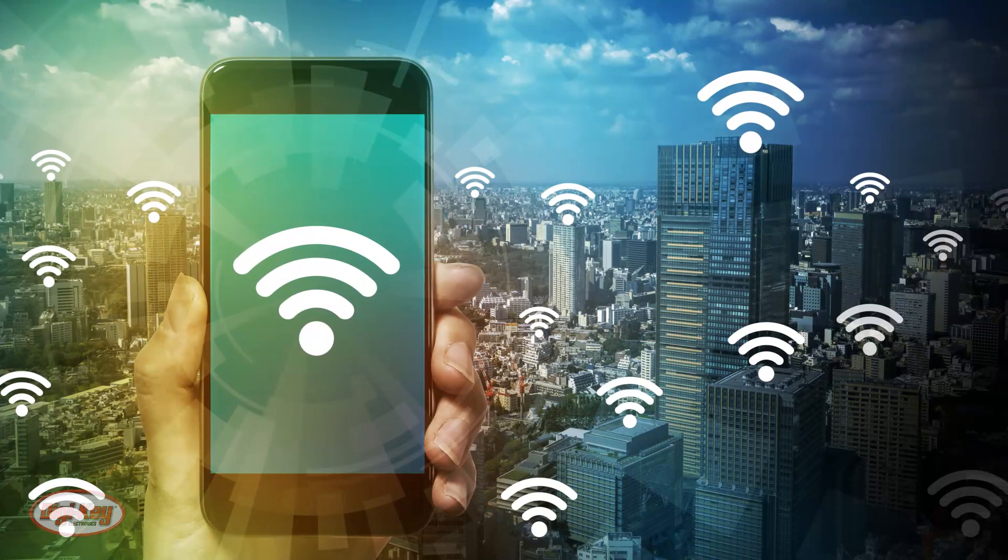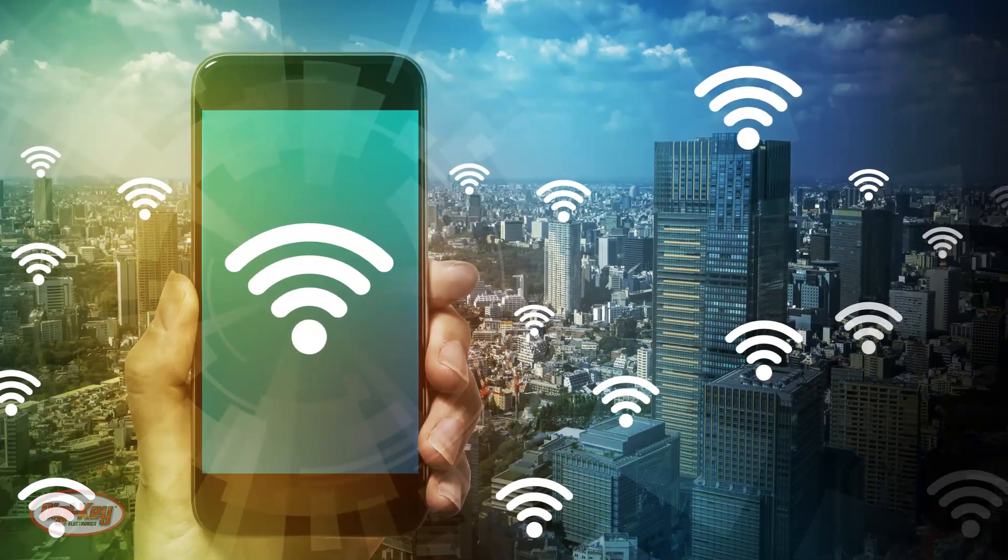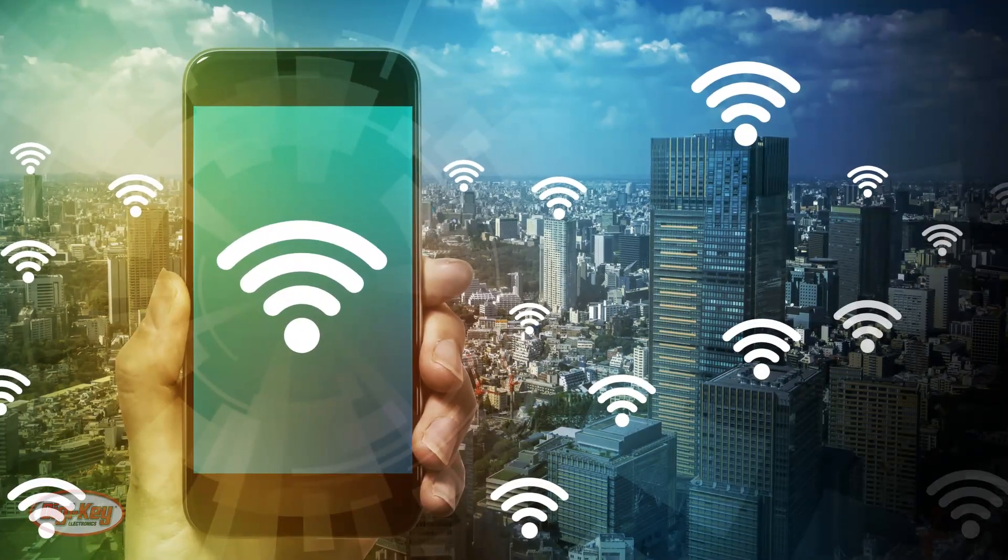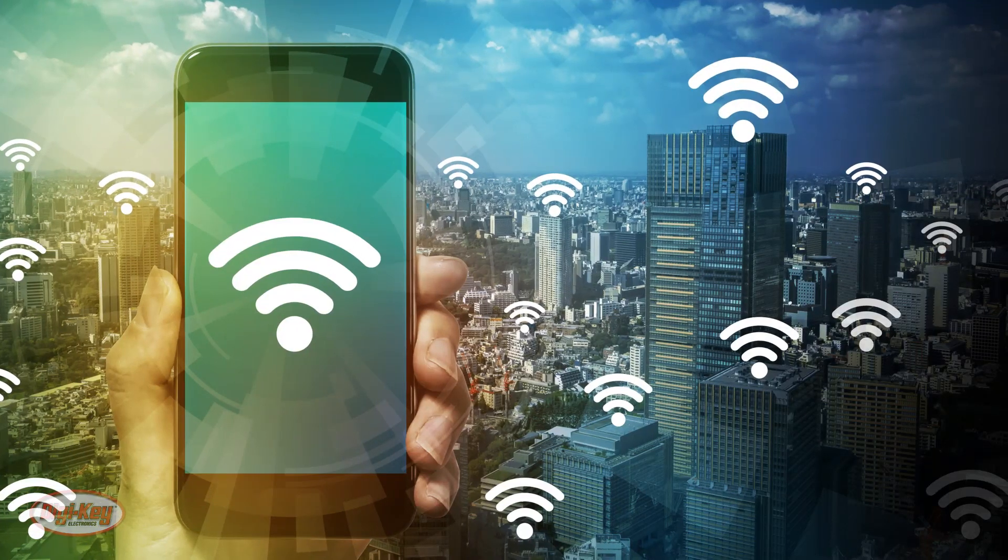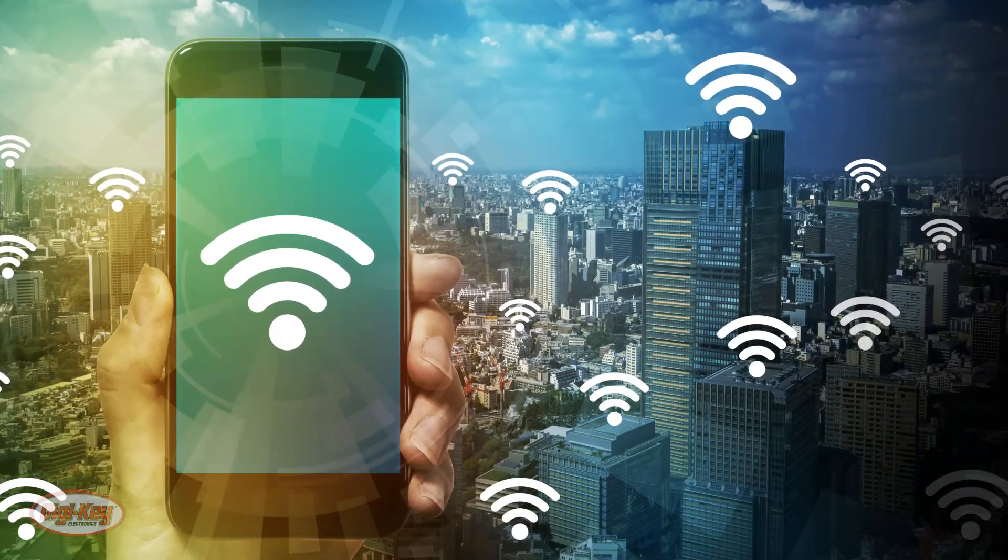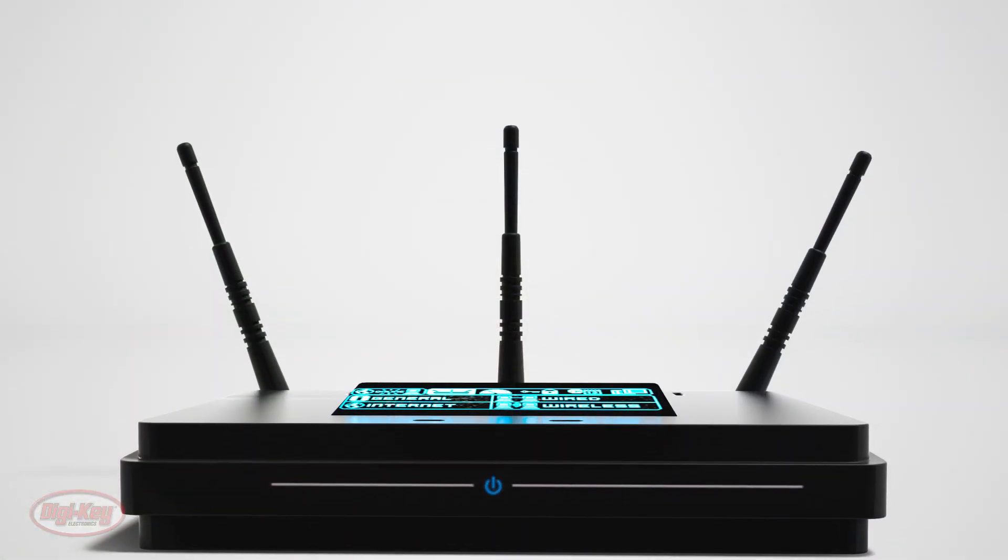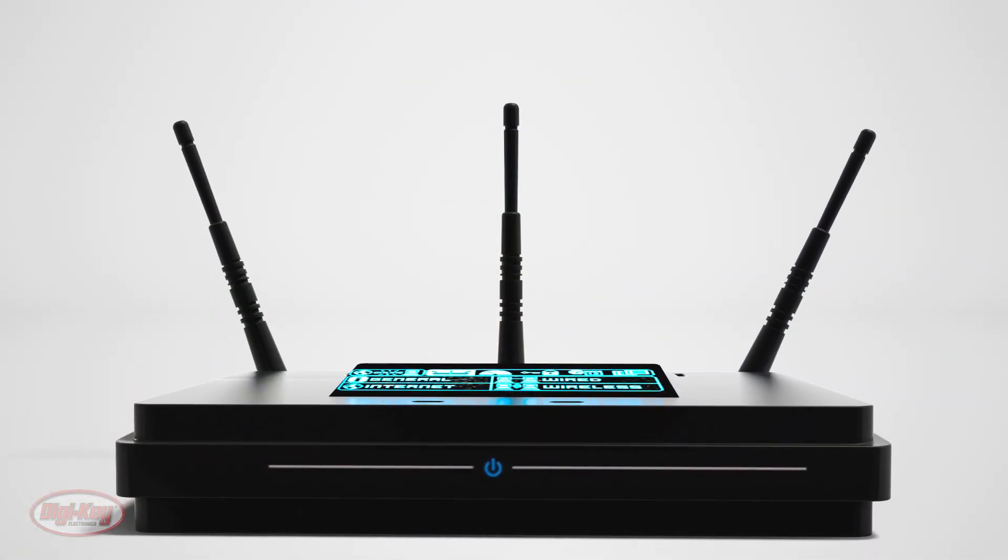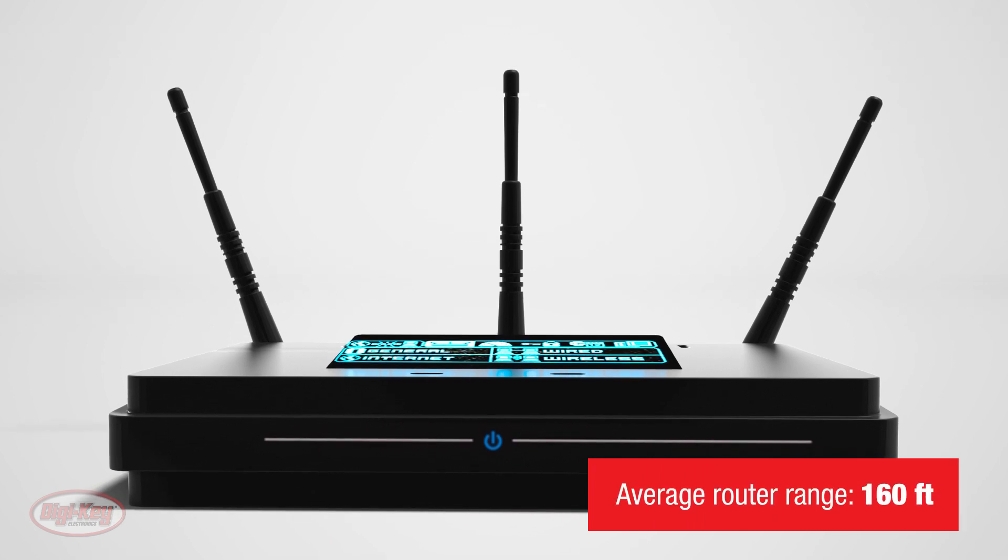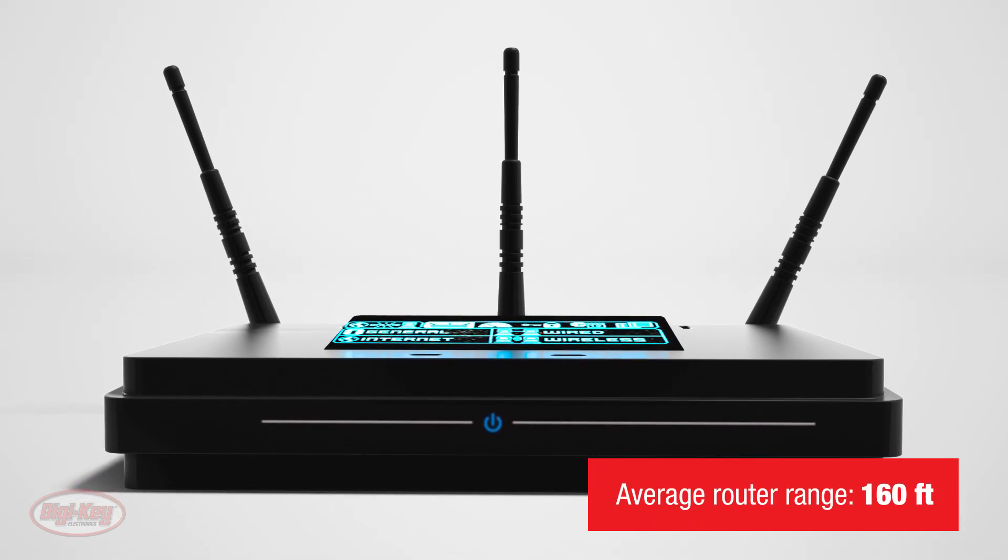While the transmission range of a WiFi network is a function of its frequency, transmission power, antenna type, the location that it's being used in, and the environment, a typical wireless router in an indoor point-to-multipoint arrangement using 802.11n and a stock antenna might have a range of about 160 feet.